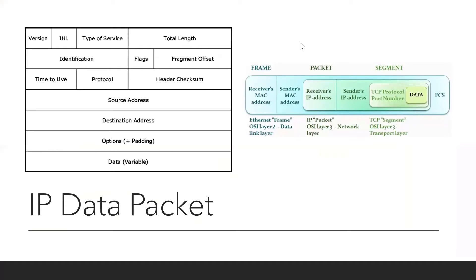This is a depiction of what an IP data packet looks like. On the left-hand side it includes the version of the IP protocol being used — typically IPv4 or IPv6 — as well as the total length of the data being transmitted, a time-to-live indicating how many hops the packet should take before it expires, the source and destination addresses, options information, and the data itself. On the right-hand side we can see how data is encapsulated as the different headers are added.